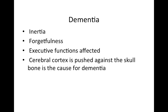Coming to dementia: there is inertia of thought and activity, progressive forgetfulness, and defect in executive functions. The cause of dementia is continuous enlargement of the ventricular cavity, which pushes the cerebral cortex against the skull bone, resulting in dementia.